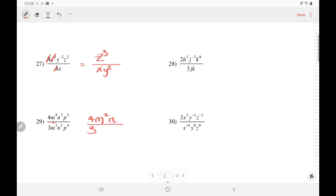Next letter is the N. Again, this is a division, so we subtract exponents: 3 minus 2 is 1, which we don't need to write. And P: 3 minus 4 is negative 1.